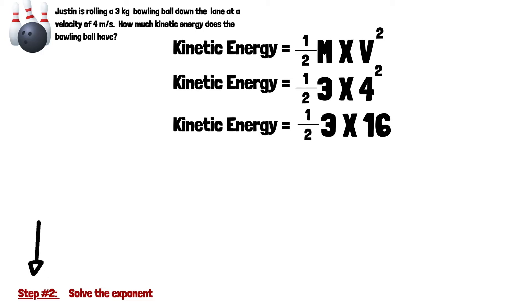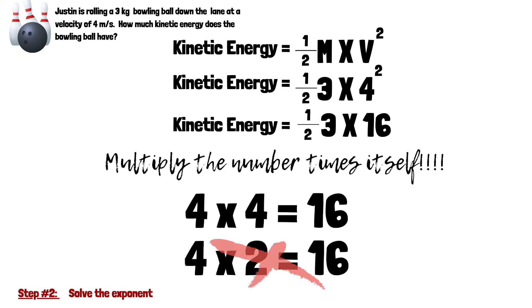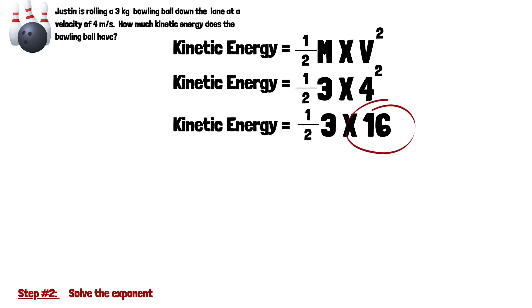The next step is to solve the exponent. The exponent is this number right here. So it has 4 squared, which means we're going to multiply that number times itself. 4 times 4 is 16. One common mistake students make when multiplying exponents is they try to multiply times 2. Don't fall into that trap. It's 4 times 4, which is 16.